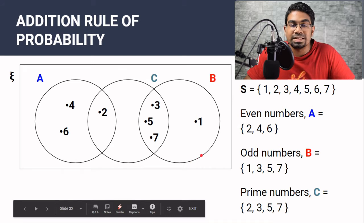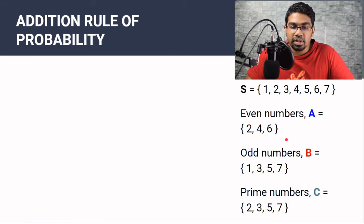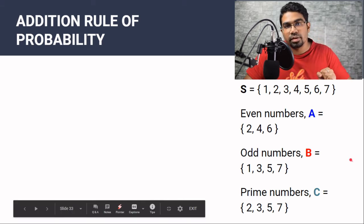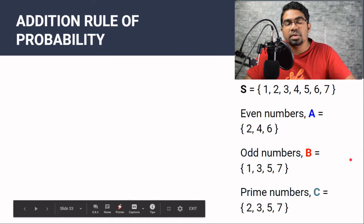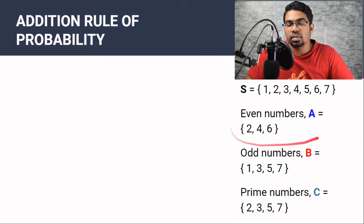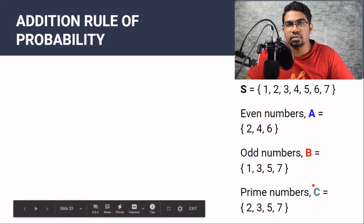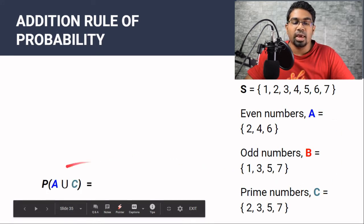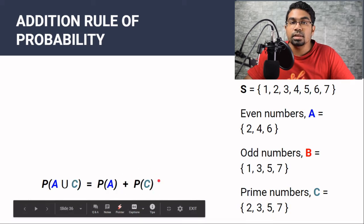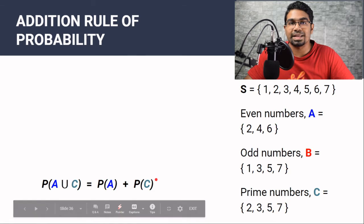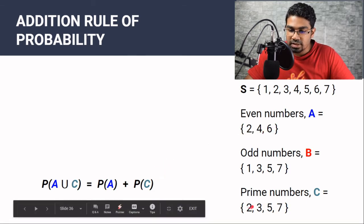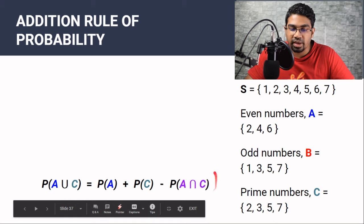With the Venn diagram it is easy to find the union of the events, but let's say we didn't have the Venn diagram. If we draw a number at random from the sample space, what is the probability of finding a number that is an even number or a prime number? In this case we'll be finding the probability of A or C, represented as the probability of A union C. Using the addition rule, this will be the probability of A plus the probability of C, minus A intersect C.